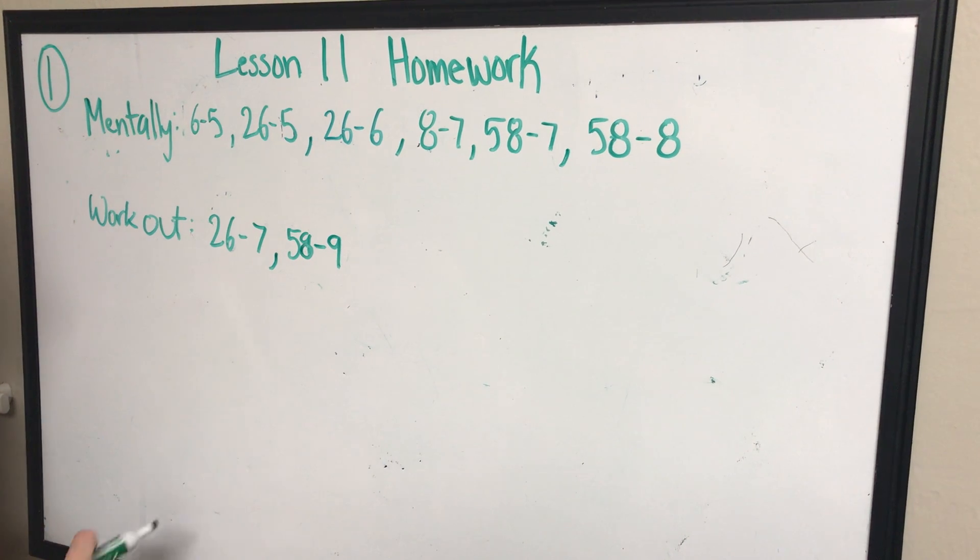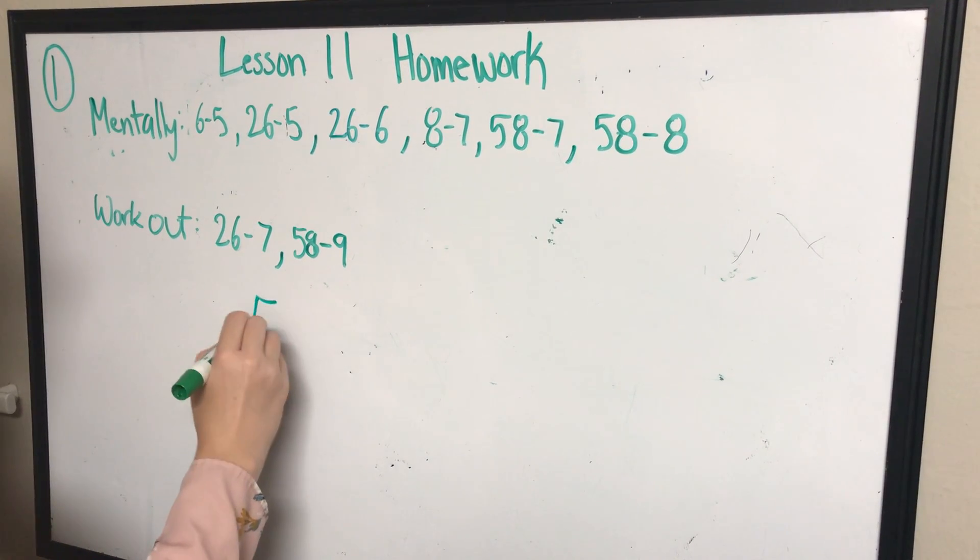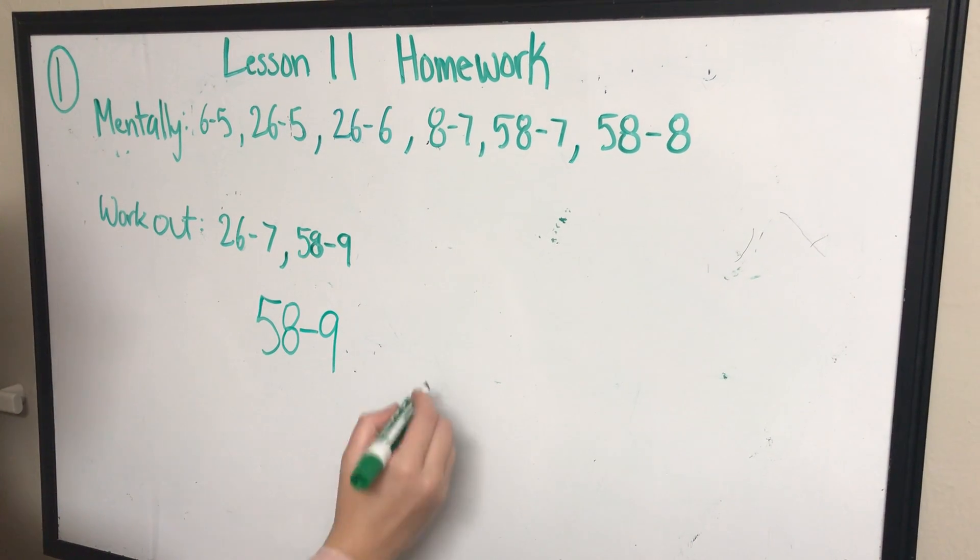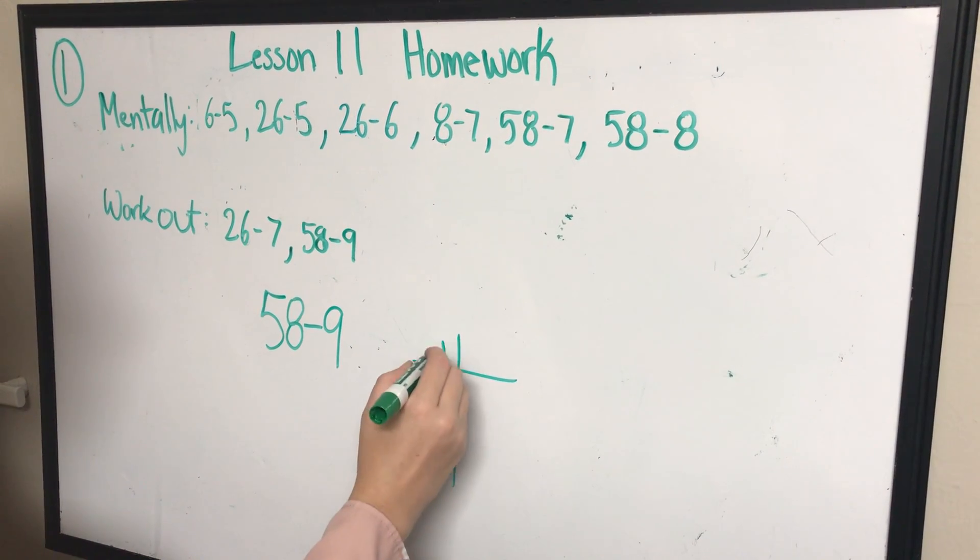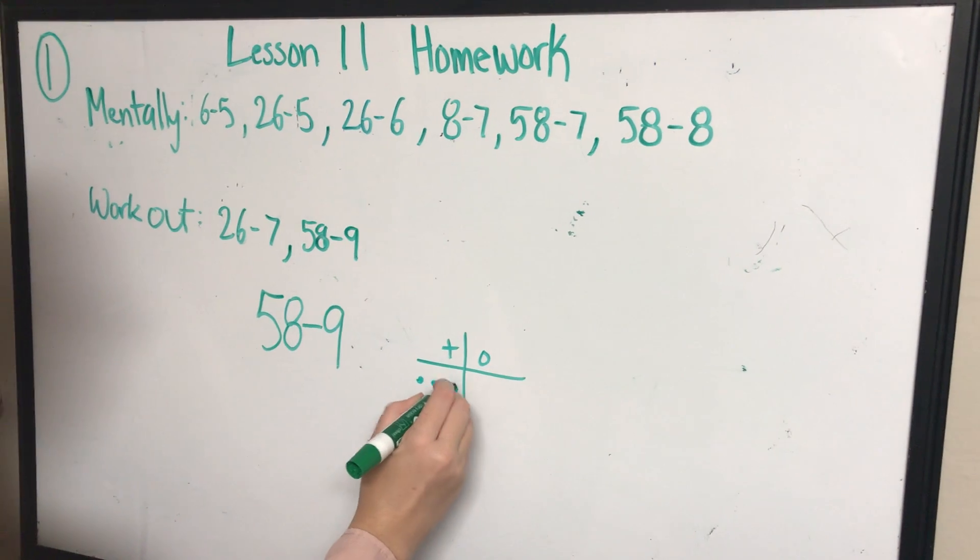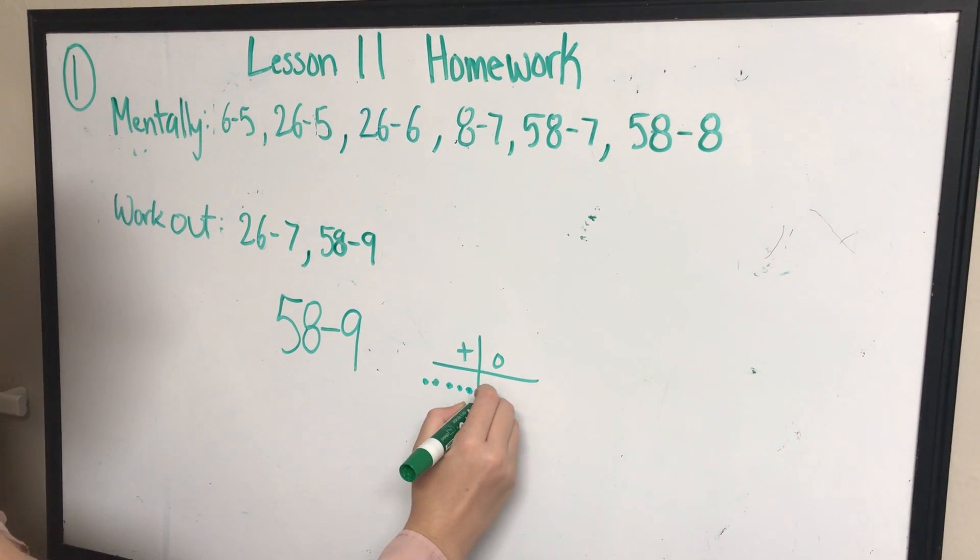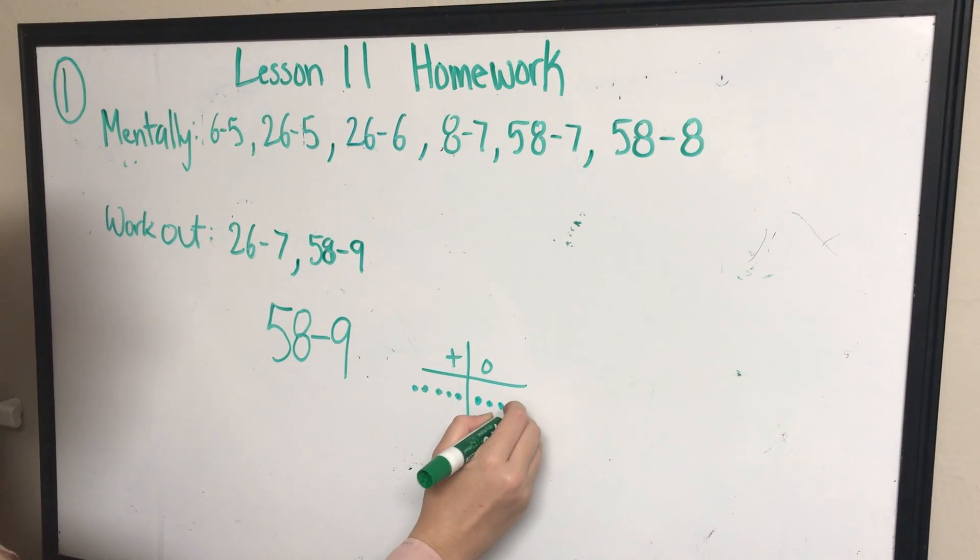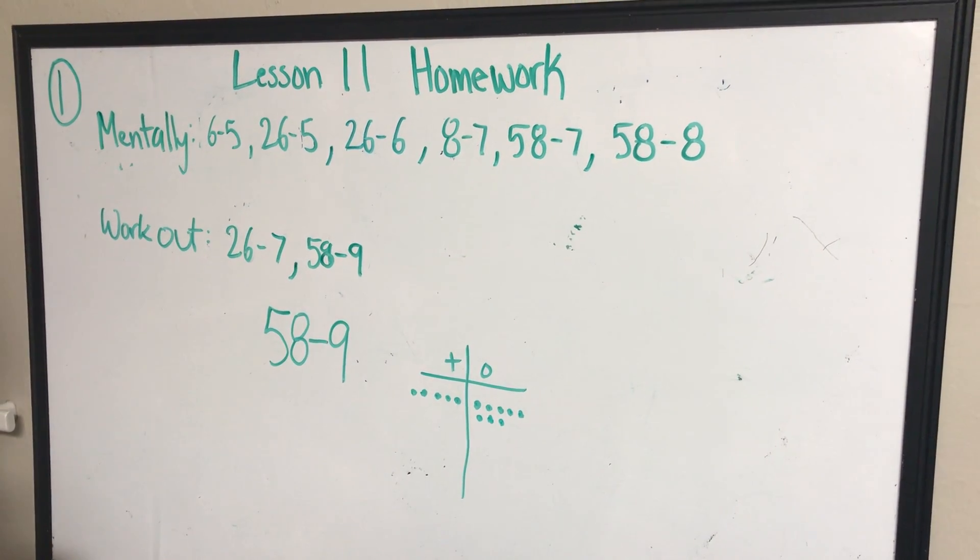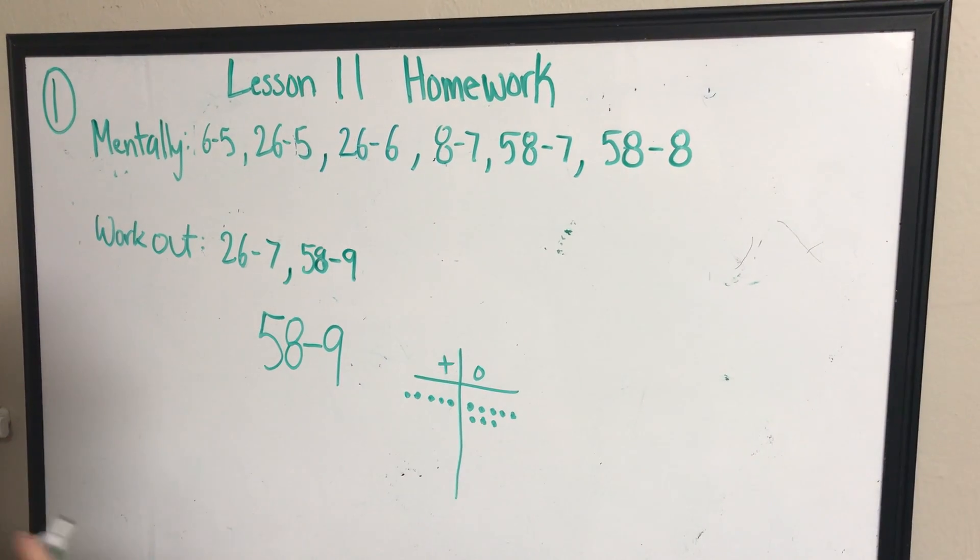My next one that you cannot solve mentally, you're going to have to work out, is 58 minus 9. I'm going to draw my chart, small on my paper. I'm going to draw my five tens, my eight ones. Can I minus nine from here? No, I don't have enough ones.